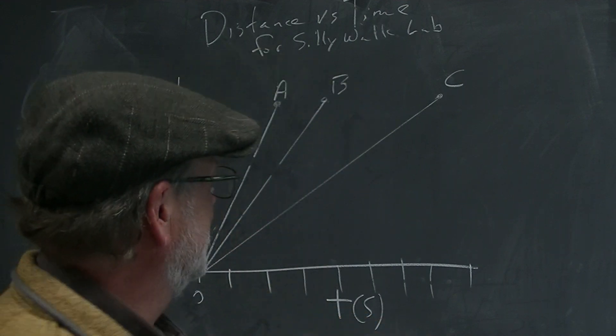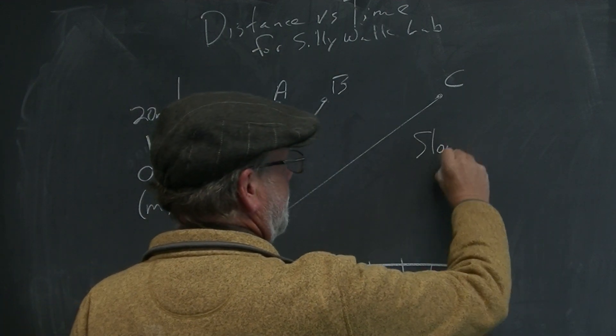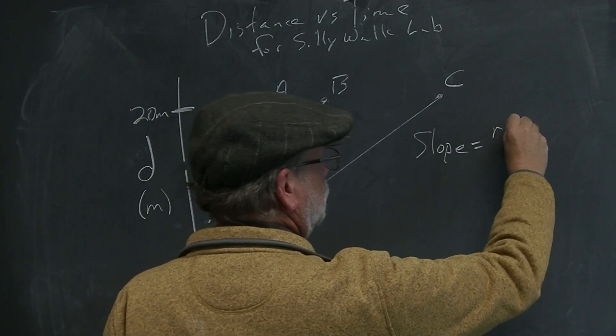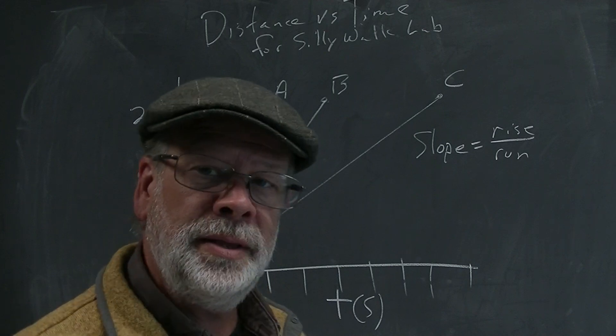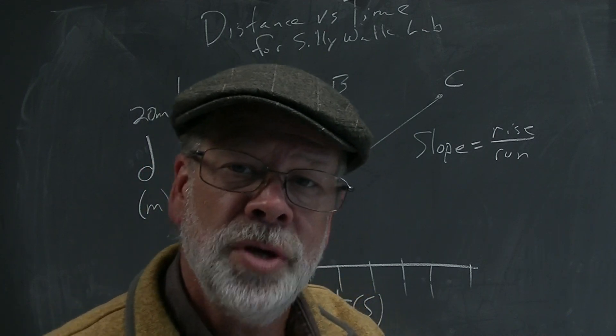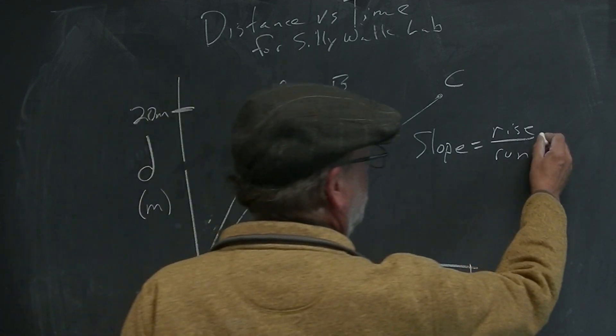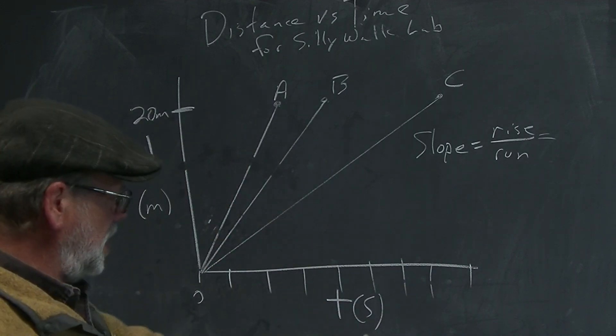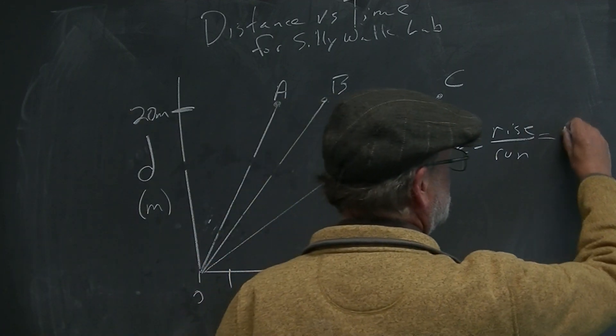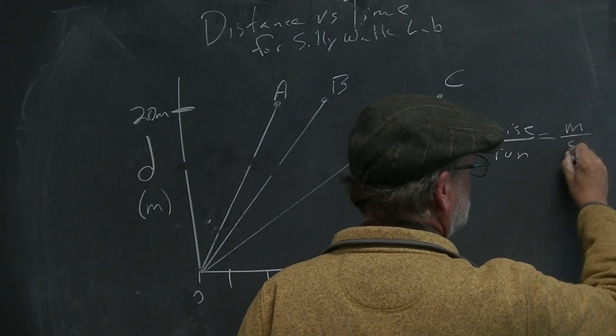You look at the slope. Now you learned slope as this. Rise over run. I hope you're learning in this class everything is about units. So the question would be, what are the units of rise? Meters. What are the units of run? Second. What is the units of slope?